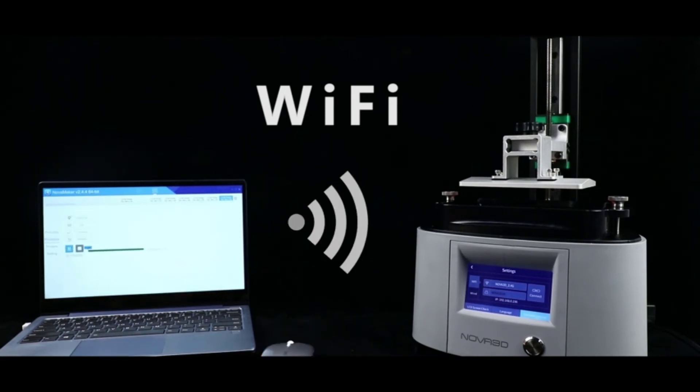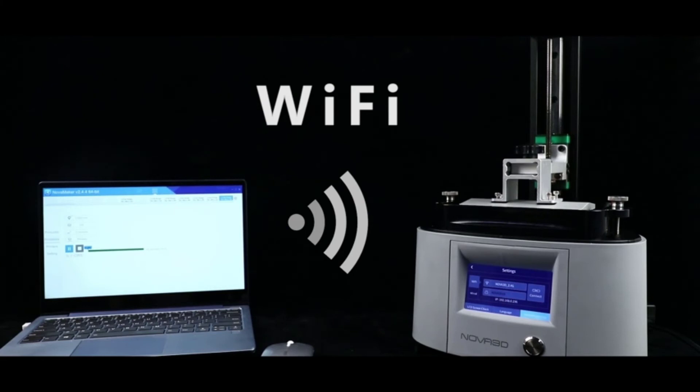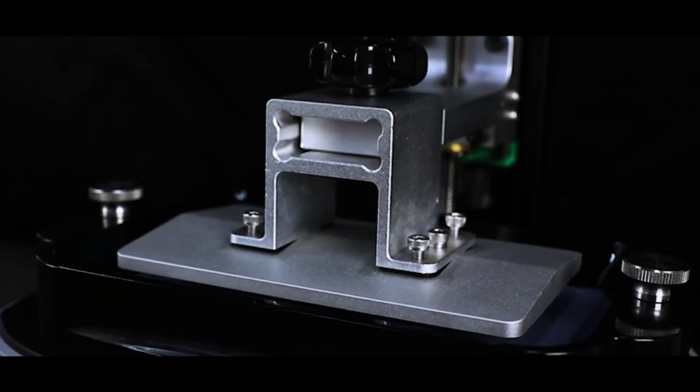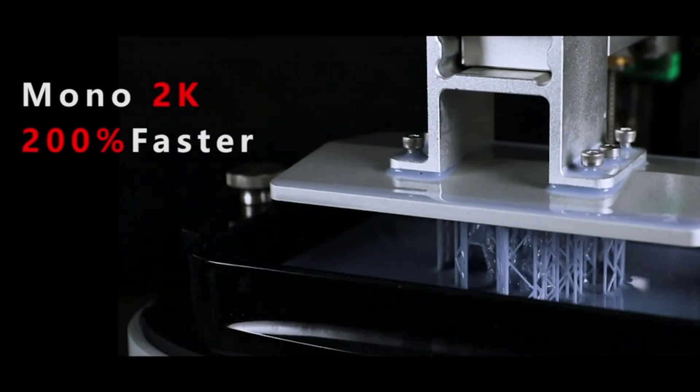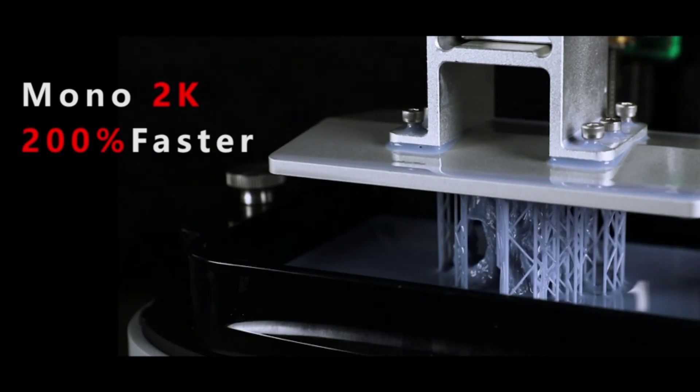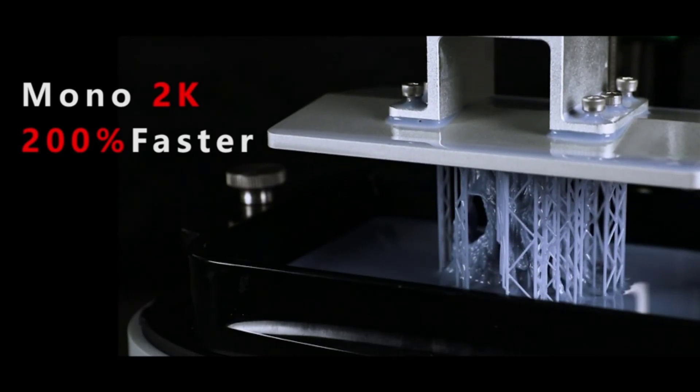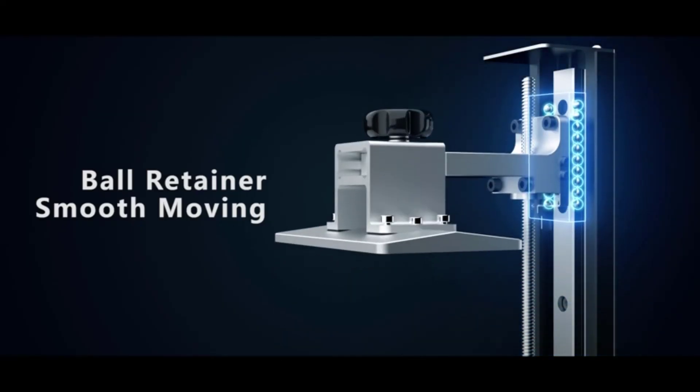Disappointingly, there's no filtration system. But the wireless connectivity, simple bed leveling, and 2K screen that churns out high-quality 3D prints makes the Nova 3D Elfin 2 an SLA printer with nearly unrivaled bang for your buck.